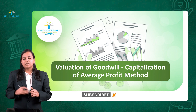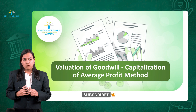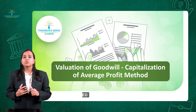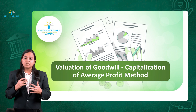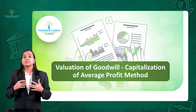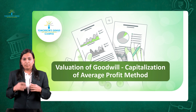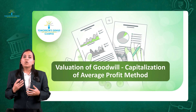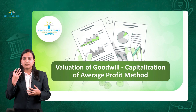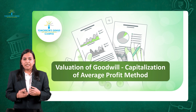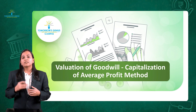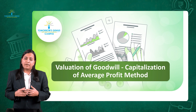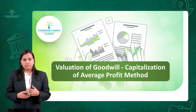When we studied the Capitalization of Super Profit Method, I told you that when the value of the business or value of the firm is more than the capital employed, there is the case of Goodwill. Same way, when we calculate Goodwill using the Capitalization of Average Profit Method, we have to consider a few things.